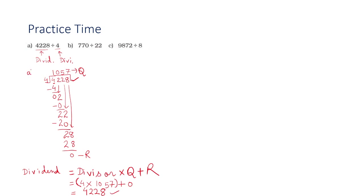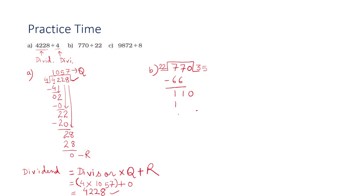Now moving to the next part, part B: 770 divided by 22. Here I am going to write the quotient. How many times will 22 go in 77? The answer is 3 times, so here I am writing 66 and we will be getting 11 over here, and 0 will come over here. Now how many times will 22 go in 110? The answer is 5 times, so you will be writing 110 over here. The remainder is 0.